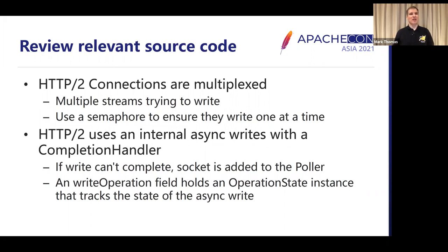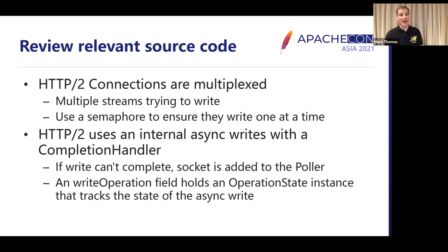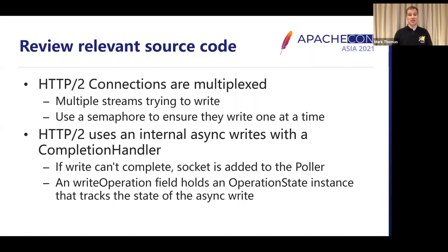We need an understanding of what's going on to help narrow down what's happening. HTTP/2 connections are multiplexed — you've got multiple streams where each stream represents a request and response, and it's possible that all those responses will want to write at the same time. To ensure the streams don't get mixed up, there's a semaphore that ensures only one writes at a time. Internally, HTTP/2 is using an asynchronous write and a completion handler. If the write can't complete immediately, the socket is added to the poller; the poller waits for an indication that the write can continue. All that state is held in an operation state object, written to the write operation field in the socket wrapper.